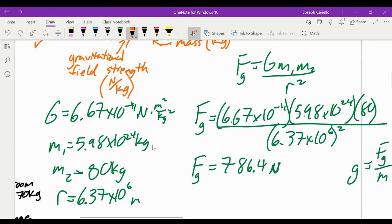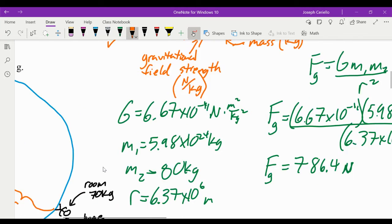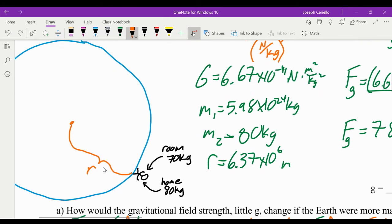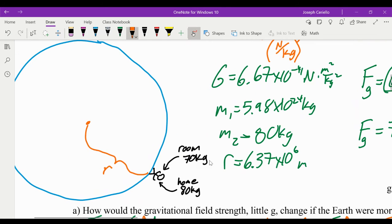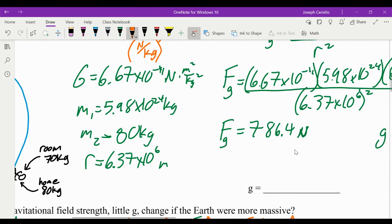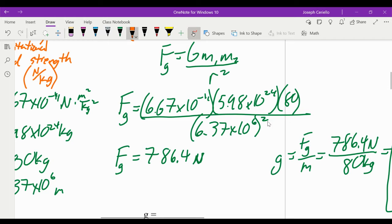Just make sure you have both of them there. And R, R is not zero. A lot of people think, oh, if you're on Earth's surface, the distance between you and the Earth is zero. But it's actually not. It's the distance between you and the Earth's center, which is the radius of the Earth, 6.3 times 10 to the 6th. So if you were to plug all of those in, you would get the force of gravity you feel is 786.4 newtons.